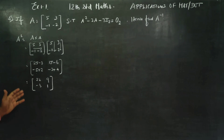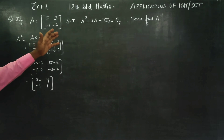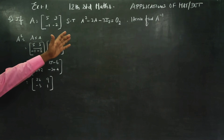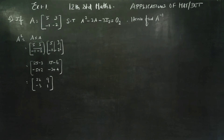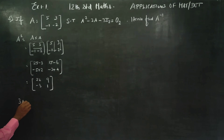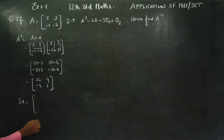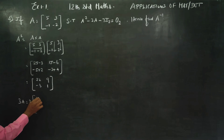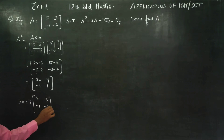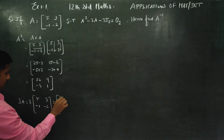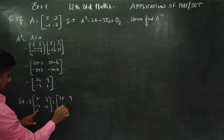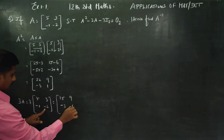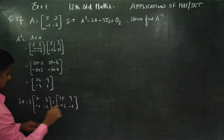After finding A², we have to find -3A. -3A means -3 into [5, 3; -1, -2], giving -3×5 = -15, -3×3 = -9, -3×(-1) = 3, -3×(-2) = 6.